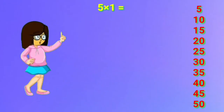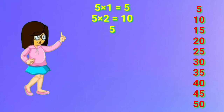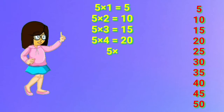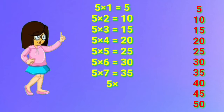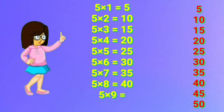5 one's are 5. 5 two's are 10. 5 three's are 15. 5 four's are 20. 5 five's are 25. 5 six's are 30. 5 seven's are 35. 5 eight's are 40. 5 nine's are 45. 5 ten's are 50.